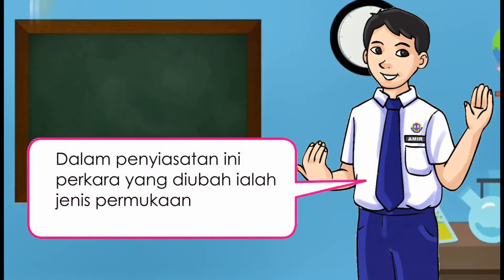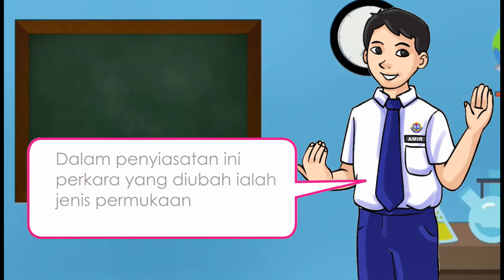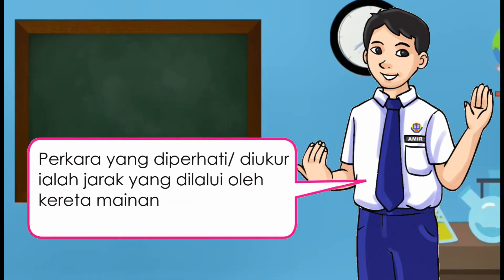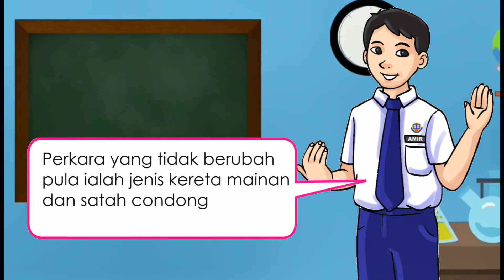Dalam penyiasatan ini, perkara yang diubah ialah jenis permukaan. Perkara yang diperhati atau diukur ialah jarak yang dilalui oleh kereta mainan. Perkara yang tidak berubah pula ialah kereta mainan dan satah condong.